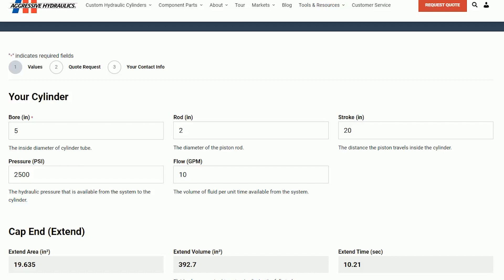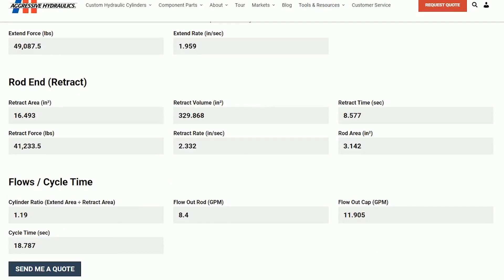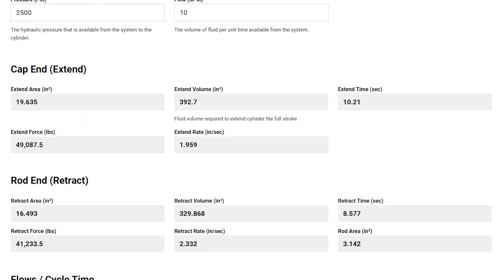This could be the maximum available from the system, or it could be used to determine the flow required to achieve a specific time or rate. The form instantly provides the calculations based on the inputs provided. Let's review these calculations.